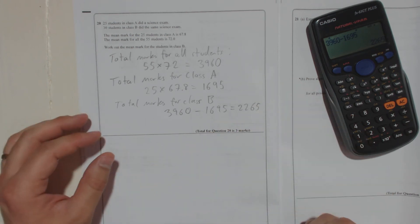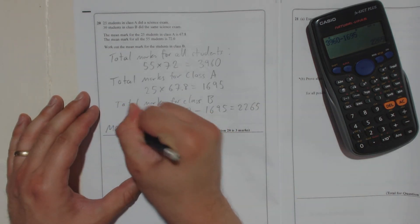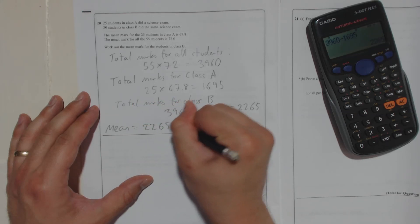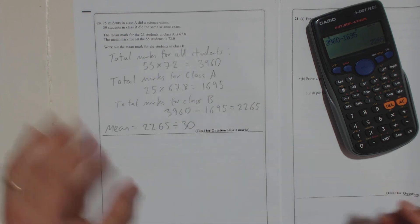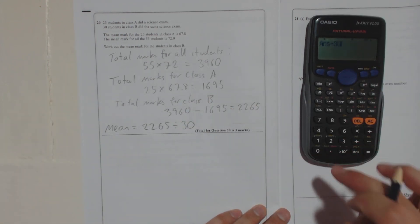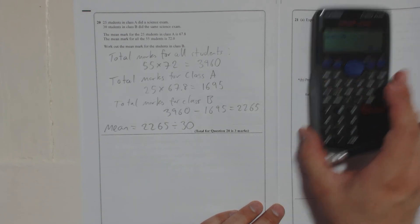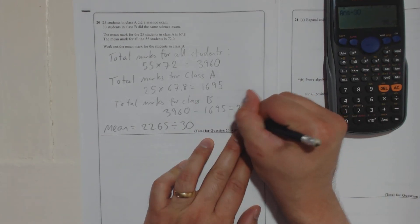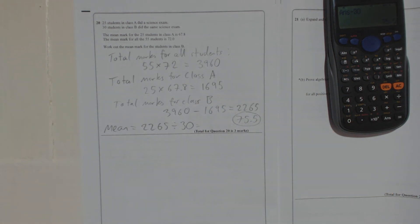And then all you've got to do to find the mean mark for class B is take the mean—2265 divided by how many are there? 30 students in class B. So divide that by 30 and you get 151 over 2, which is 75.5. And that's it.